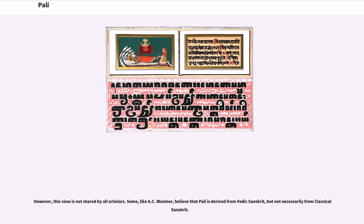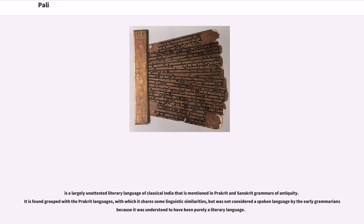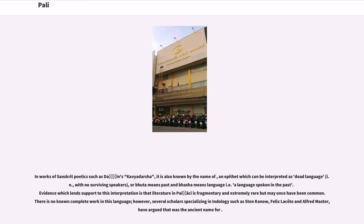Some scholars, like A.C. Woolner, believe that Pali is derived from Vedic Sanskrit, but not necessarily from Classical Sanskrit. Pali is a largely unattested literary language of classical India that is mentioned in Prakrit and Sanskrit grammars of antiquity. It is found grouped with the Prakrit languages, with which it shares some linguistic similarities, but was not considered a spoken language by the early grammarians because it was understood to have been purely a literary language.